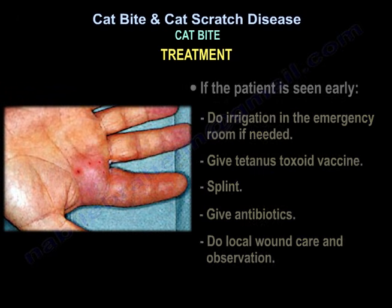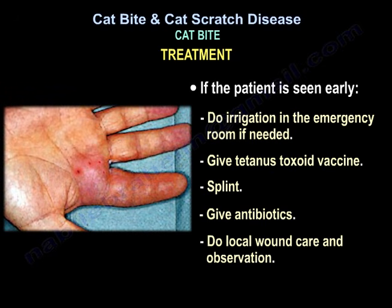If the patient is seen early, do irrigation in the emergency room. If needed, give tetanus toxoid, splint, give antibiotics, provide local wound care and observation.